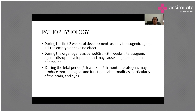During the fetal period — ninth week to ninth month — teratogens may produce morphological and functional abnormalities, particularly of the brain and eyes. This is clinically important: when taking a patient history, if a patient reports taking chloroquine during pregnancy, you need to know when to continue the pregnancy and when to consider abortion, and what tests to order.